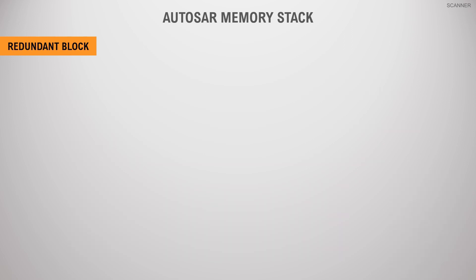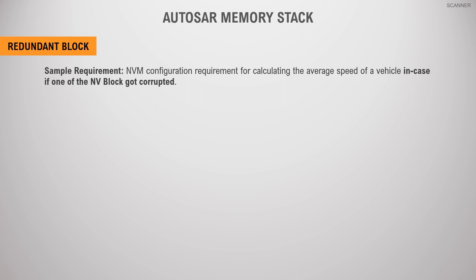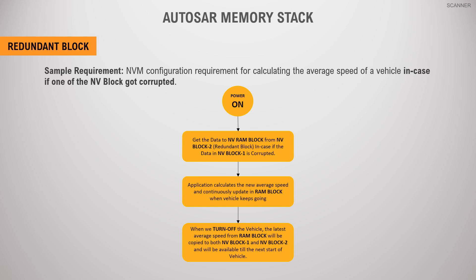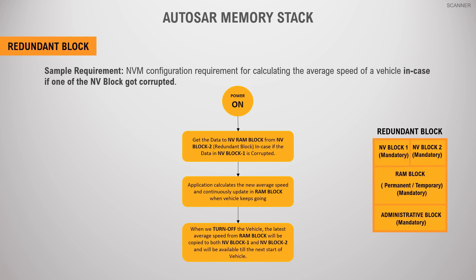As an example, let us take the same average speed scenario where the memory in which the last stored average is corrupted. In this case, as a data corruption or memory fault occurred while reading data from the main NV block, the NVRAM Manager reads the last average speed of the vehicle from the redundant block to the RAM block. Then the application calculates the average value during vehicle runtime and frequently updates it in the RAM block. Finally, when the vehicle stops, the average speed from the RAM block is stored in both the main NV block and the redundant block, and during shutdown both NV blocks' data is stored in memory for the next calculation.